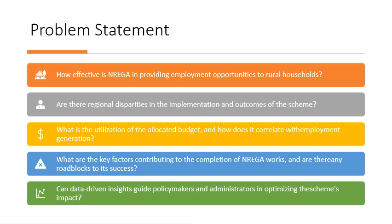The problem statement addresses: how effective NREGA is in providing employment opportunities in rural households, whether there are regional disparities in implementation and outcomes, the utilization of allocated budgets and how it correlates with employment generation, and key factors contributing to work completion.